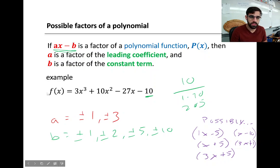So, our leading coefficient in this example is 3. Our possible a values, or coefficients of any factor x, could be positive 1, negative 1, positive 3, or negative 3. Those are the only possible coefficients on any factor for this polynomial function.